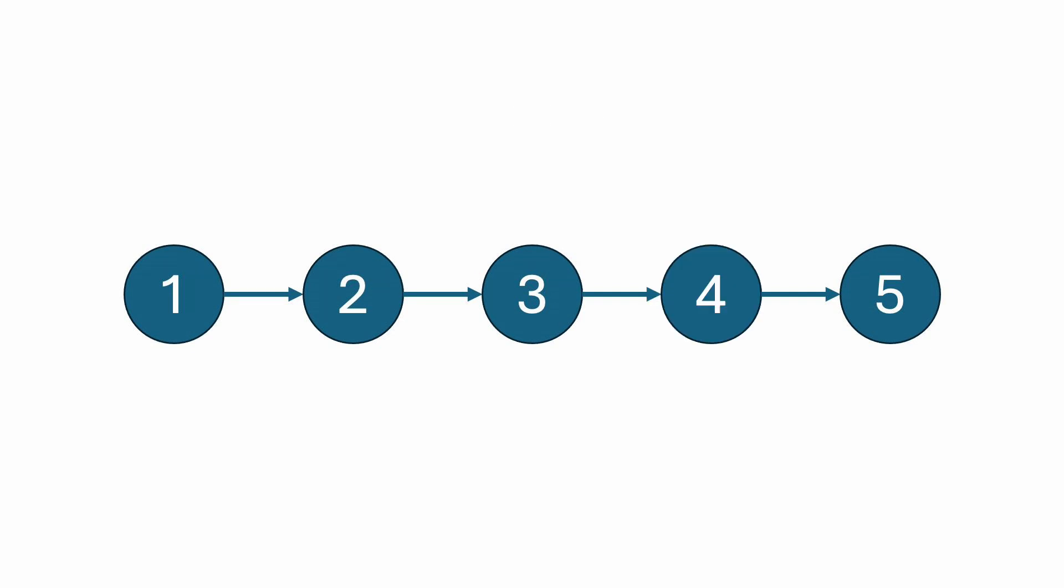Now, this problem would be a lot easier if n was given in terms of nodes from the start of the list. For example, if n equals 4 meant that we need to remove the fourth node from the start of the list, then we could simply traverse the list until we reach the n-1th node, so node 3. We could then make node 3 point to node 5, and we'd be done.